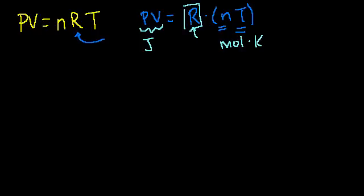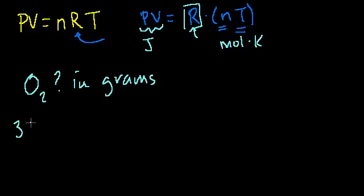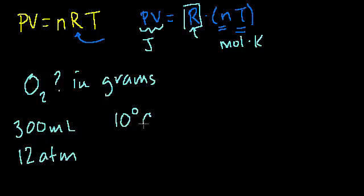Let's say we want to know how many grams of oxygen, grams of O2. How many grams of O2 are in a 300 milliliter container that has a pressure of 12 atmospheres and the temperature is 10 degrees Celsius.